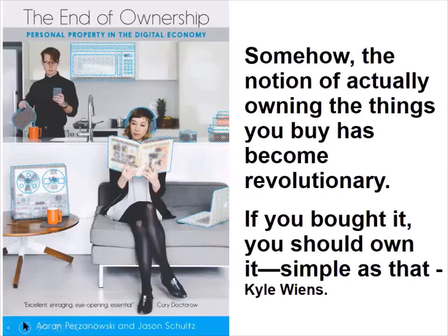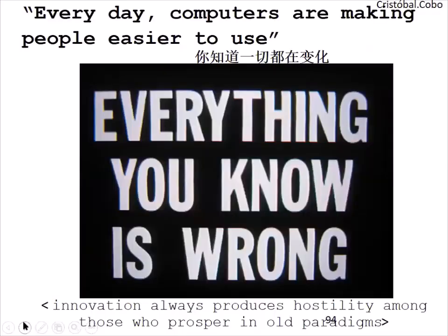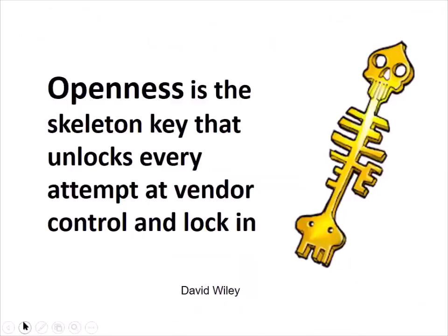Somehow the notion of actually owning the things you buy has become revolutionary. If you bought it, you should own it — it's as simple as that. But openness is the skeleton key that unlocks every attempt at vendor control and locking. So let them keep their strict copyright — if we as educators just go open, we can ignore them and bypass them.